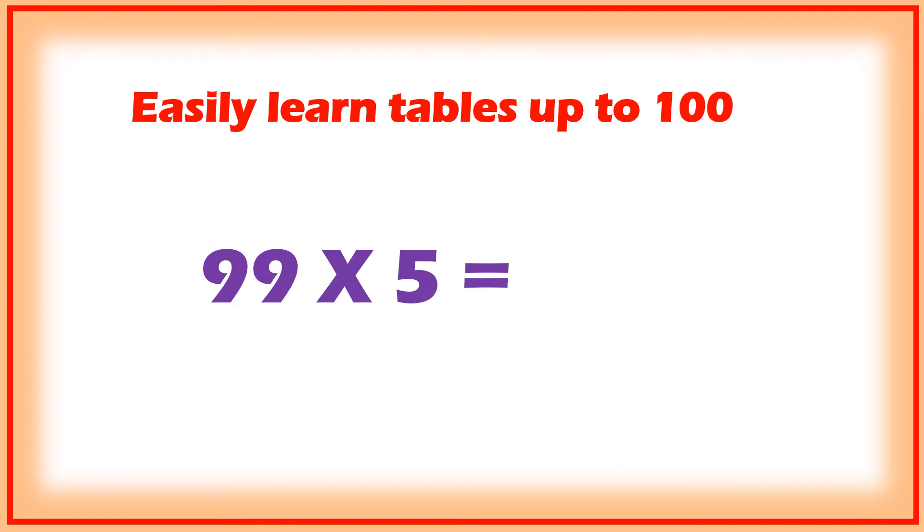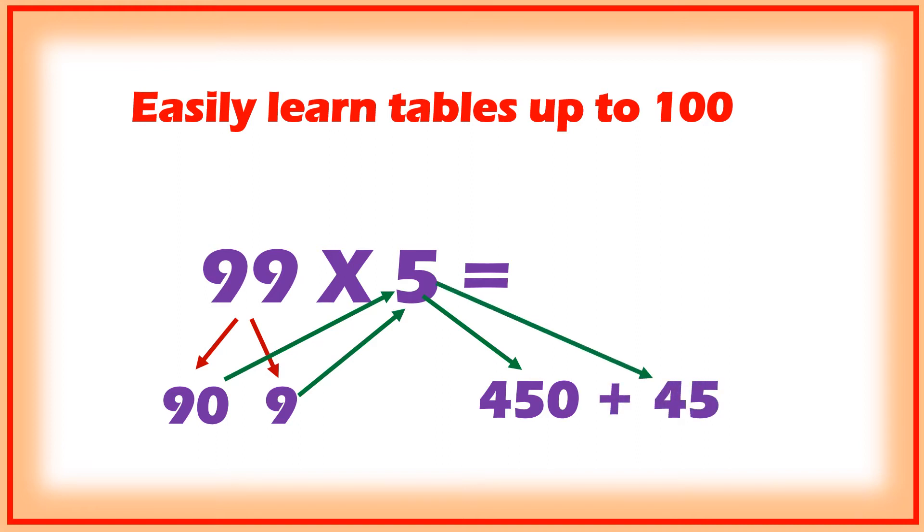Let me try one more example: 99 into 5. 99 is split into 2 - that is 90 and 9. 9 fives are 45. If we add zero then it will become 450, plus 9 into 5 is 45. These two numbers: 450 plus 45 is equal to 495.